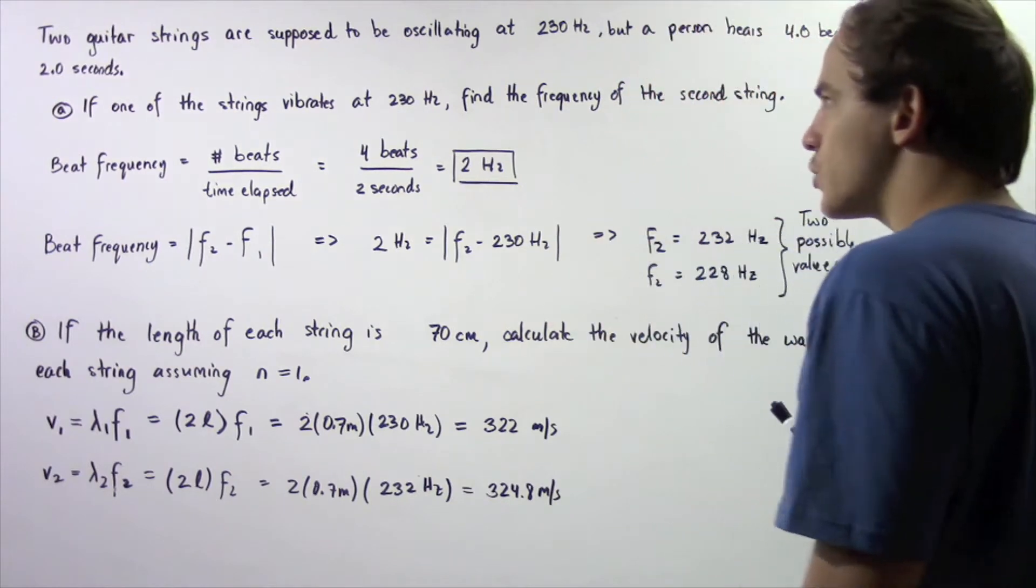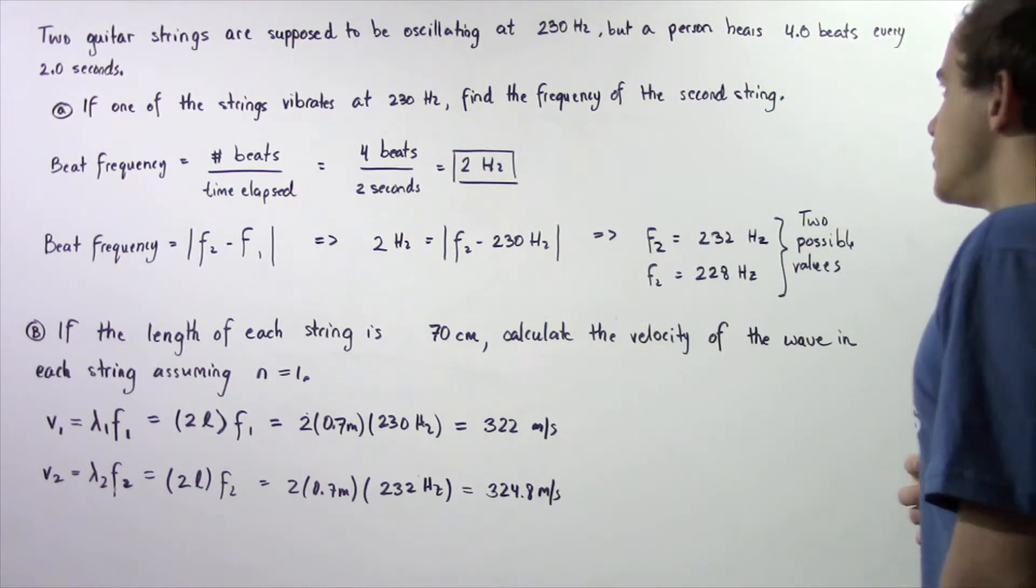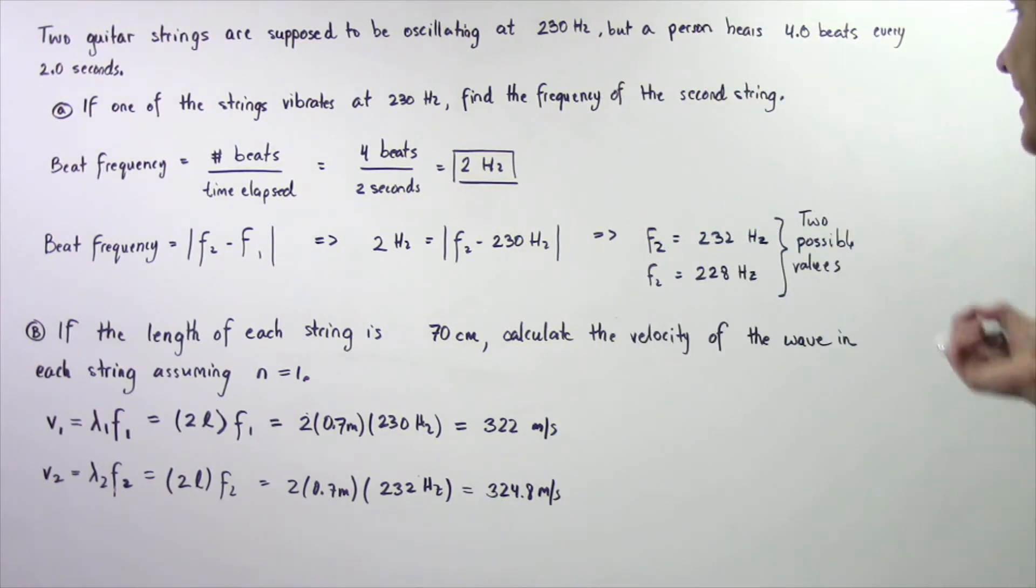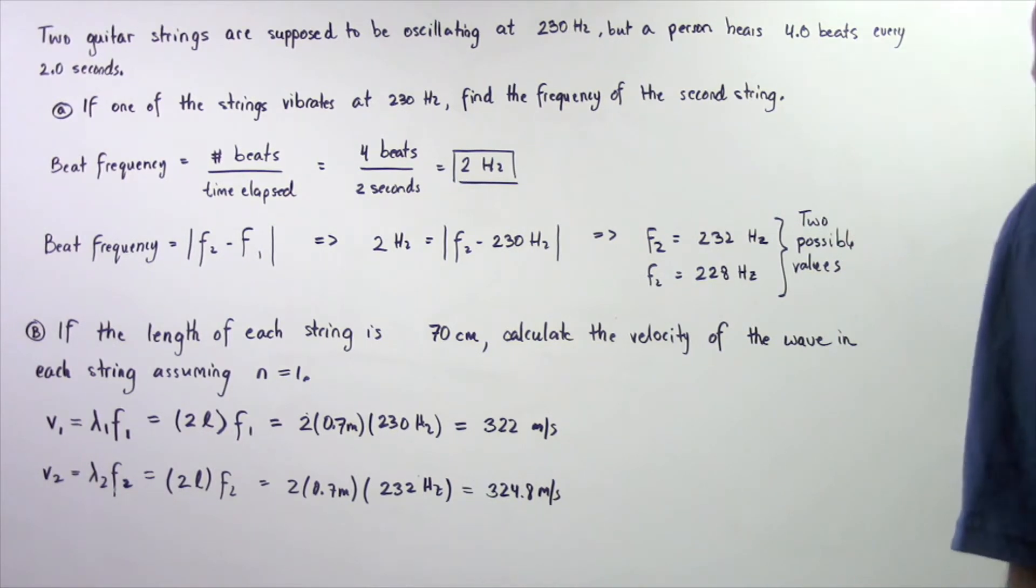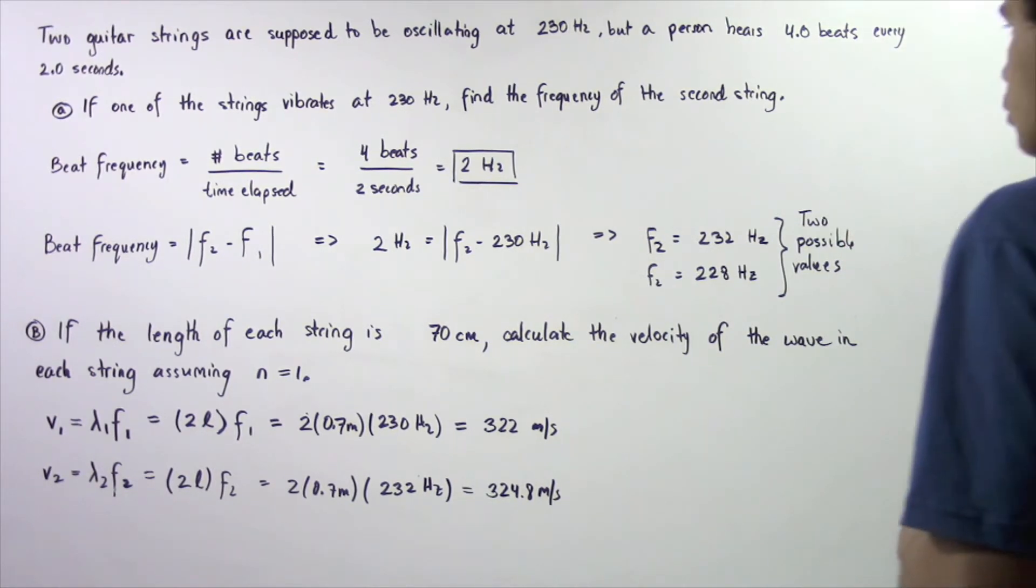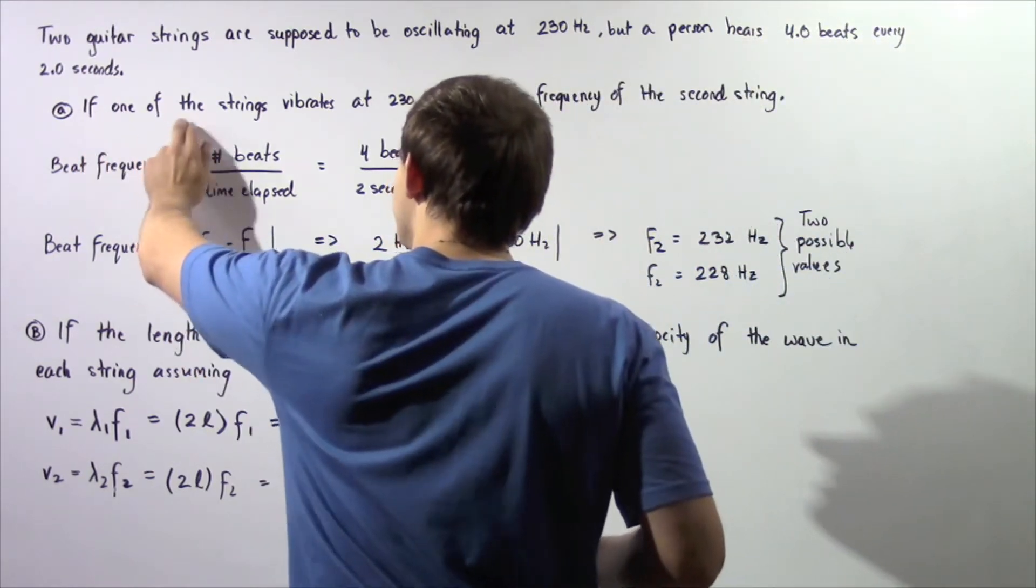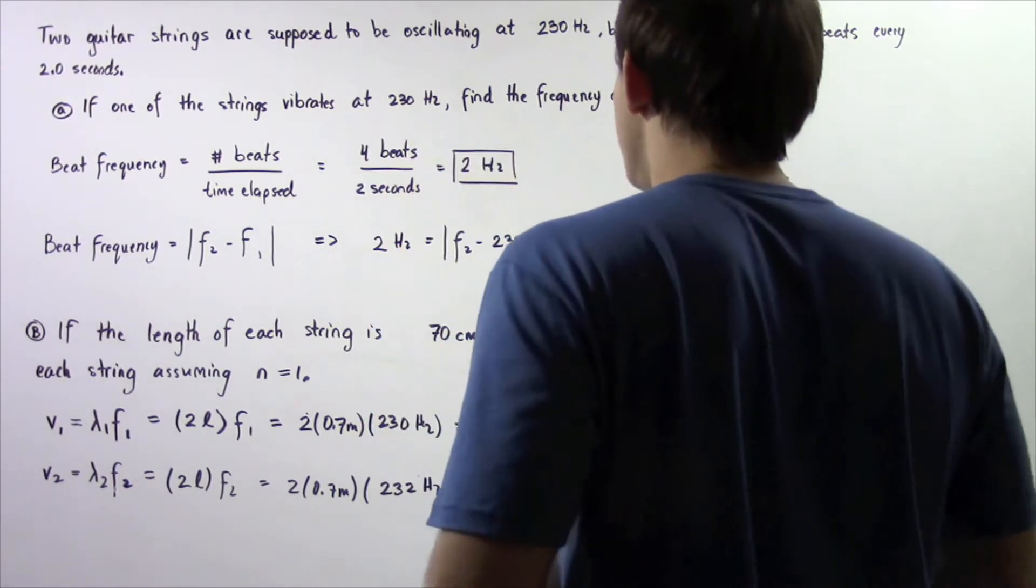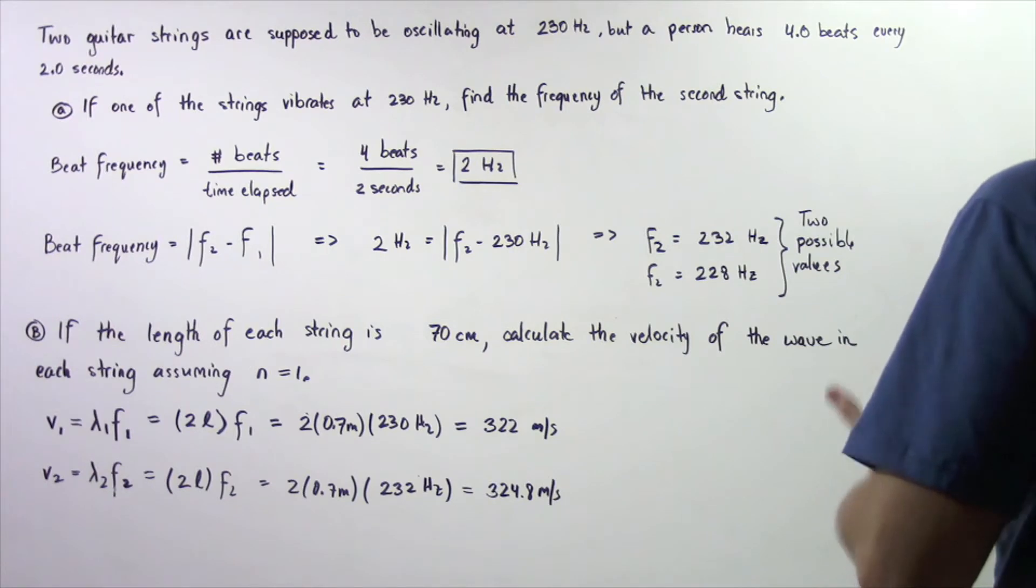Two guitar strings are supposed to be oscillating at an equal frequency of 230 Hertz, but a person standing next to the two vibrating strings hears four beats every two seconds. In part A, if one of these guitar strings vibrates at a frequency of 230 Hertz, find the frequency of the second guitar string.